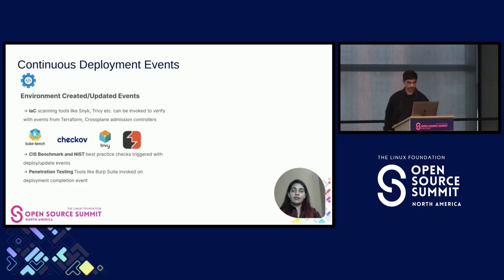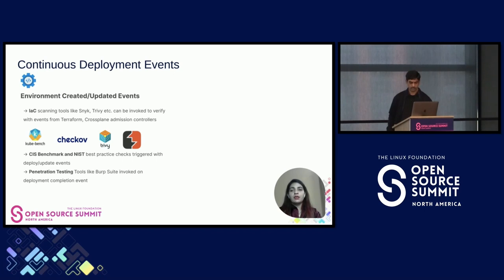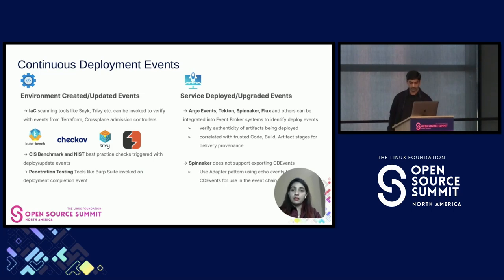At the continuous deployment stage, the environment is discovered and updated — which can trigger IaC scans using integrations like Trivy and Snyk based on Terraform events. The environment configured can be verified against CIS and NIST benchmarks and best practices. Penetration tests can be triggered upon deployment events using integrators like Burp Suite. We integrate with deployment events from Spinnaker, Argo, Tekton, and Flux to initiate artifact integrity checks and deployment configuration checks. The artifact reaching deployment must have passed through a verified source, build, and artifact stage to ensure trust. Spinnaker currently does not support exporting CD events, so we use adapter patterns with Pico events to convert them into CD events.